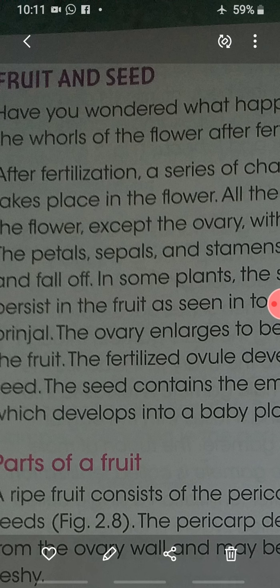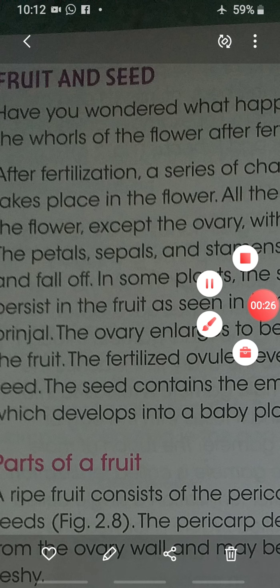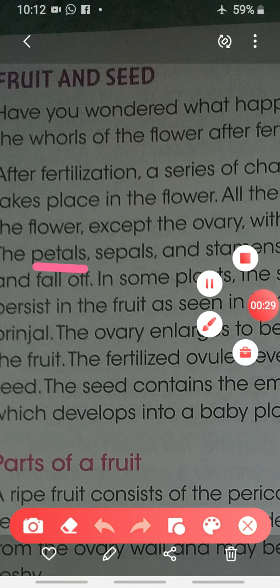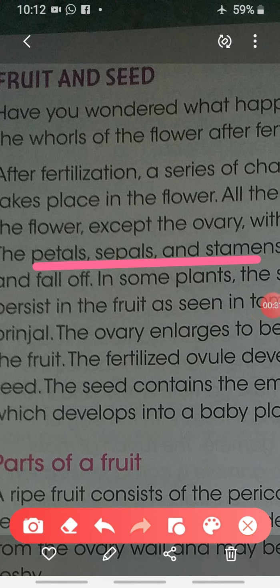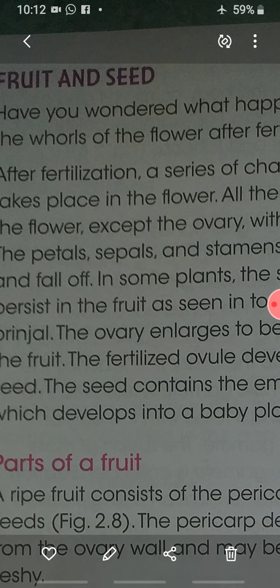After fertilization, different changes take place in the flower. Except for the ovary, all other parts — the petals, sepals, and stamen — wither away and fall off. The ovary enlarges to form the fruit, and the fertilized ovule forms the seed. The seed contains the embryo, which develops into a baby plant.